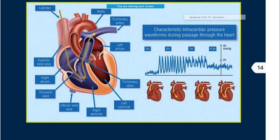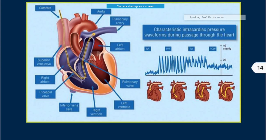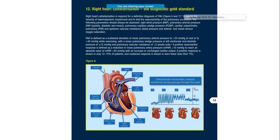When doing right heart catheterization and going through different segments, you see characteristic waveforms as you traverse different segments of the heart. Right heart catheterization is considered the gold standard for diagnosis. You try to see the wedge pressure, and on the basis of that you can define pulmonary hypertension.